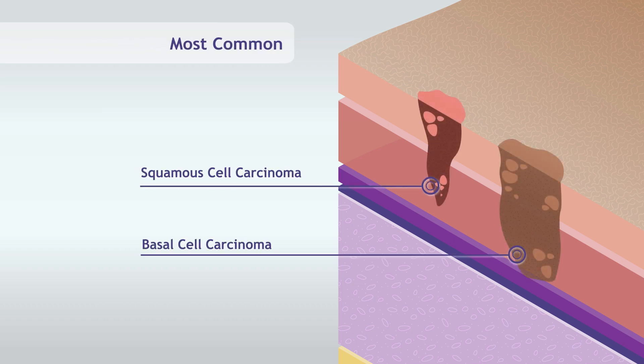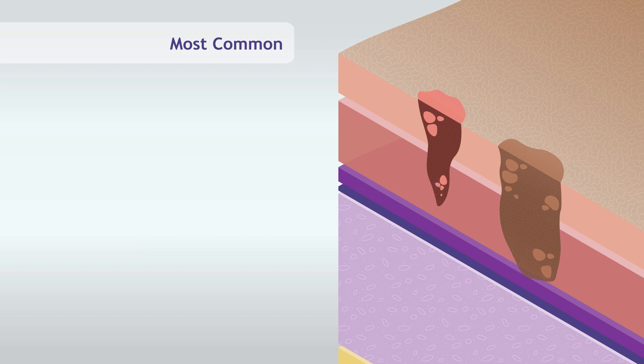Basal and squamous cell carcinomas are the most common skin cancers, and they occur in the layers of the epidermis for which they are named, usually in areas of the skin exposed to the sun. Both are usually curable through treatments like radiation or surgery.